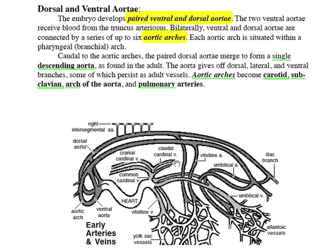There are paired vessels. There are paired veins draining the yolk sac and the allantois, and paired veins draining the embryo itself. On the arterial side, there are paired ventral aorta and paired dorsal aorta, except in the region where an endocardial tube has formed. The paired dorsal aorta and ventral aorta are connected by a series of aortic arches, two of which are shown here. Caudal to the aortic arches, the dorsal aorta will fuse, and the individual aortic arches — the third, the fourth, and the sixth — will become major vessels.